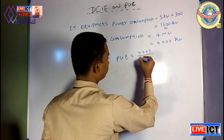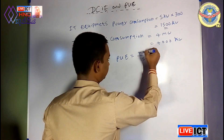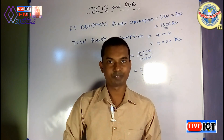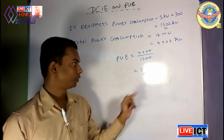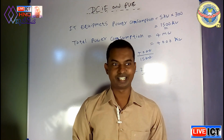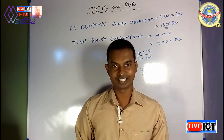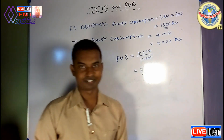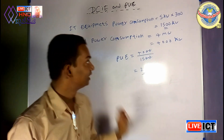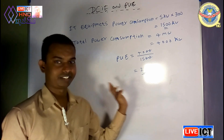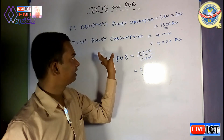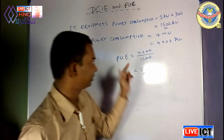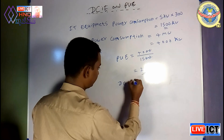4,000 divided by 1,500 gives a PUE value of approximately 2.67. This is the PUE value. If you have a PUE of 2.6 to 2.67, this is your PUE value. The corresponding DCIe value can then also be calculated from this — DCIe is related to the PUE value.